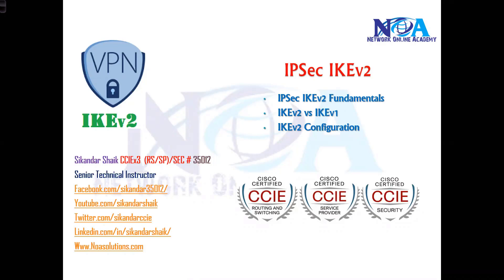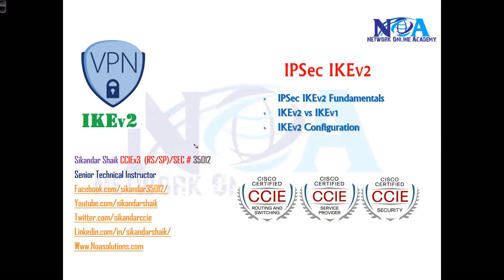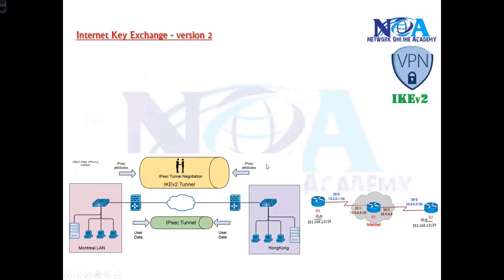In this section we will try to get into IPSec IKEv2. In the previous IPSec VPN topics we have seen IKE version 1, which has been used for securing VPN connections. We discussed version 1 in detail - the different phases like phase 1 and phase 2, and the message exchange between peers. In this section we'll get into IKEv2 fundamentals, the differences between IKEv1 and IKEv2, and the configuration differences when implementing version 2.